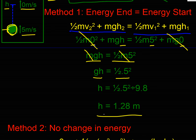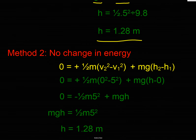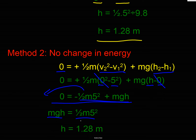The second way is to look at the changes: we know there's no change in overall energy, so zero equals the change in kinetic energy (driven by change in v²) plus the change in gravitational energy (change in h). Putting in the values: 0 minus 5² for the kinetic part, and h minus 0 for the gravitational part. Those terms simplify, and swapping the negative term over, I get mgh = half mv², which gives the same answer of 1.28 meters. You might notice this is essentially the SUVAT equation v² = u² + 2as.